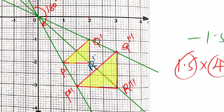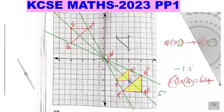To find the center of enlargement, join any two object and image point pairs using straight lines. For example, join Q' to Q''' using a straight line and extend it; then join P' to P''' using a straight line. Where those two extended lines meet is the center of enlargement — which turns out to be the origin, point O.